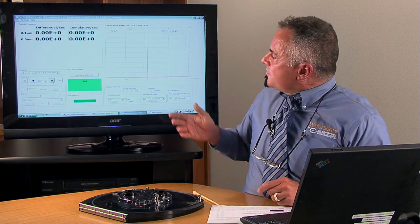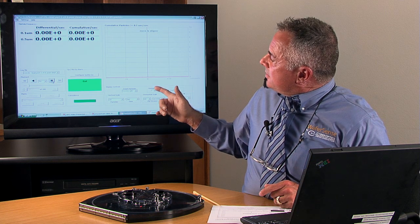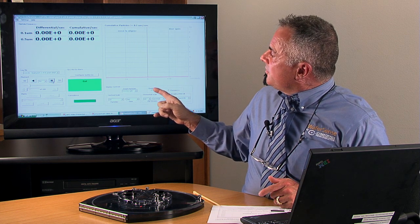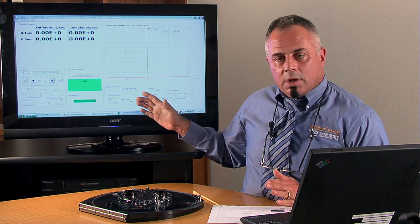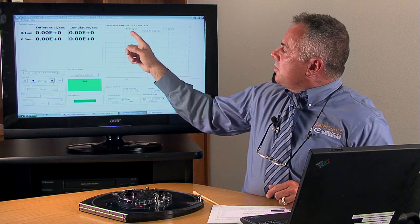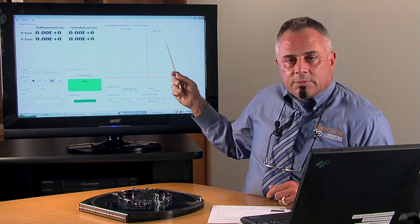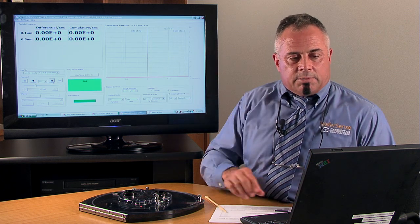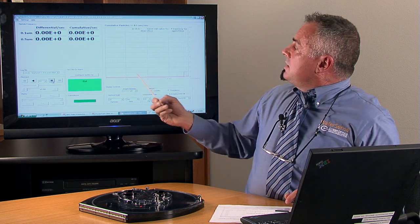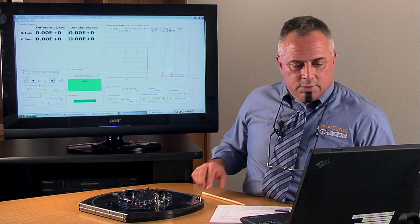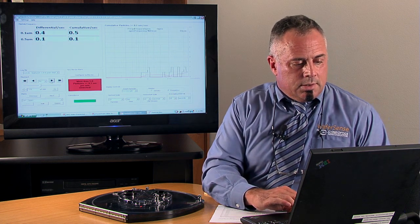So I've loaded the particle file from one of our tool qualifications. Here, door, open door, move aligner into chamber A, chamber B, etc. I have it running pretty fast here. But you can see, in this case, very few particles. Until we get to this chamber, we've discovered some particles showing up.